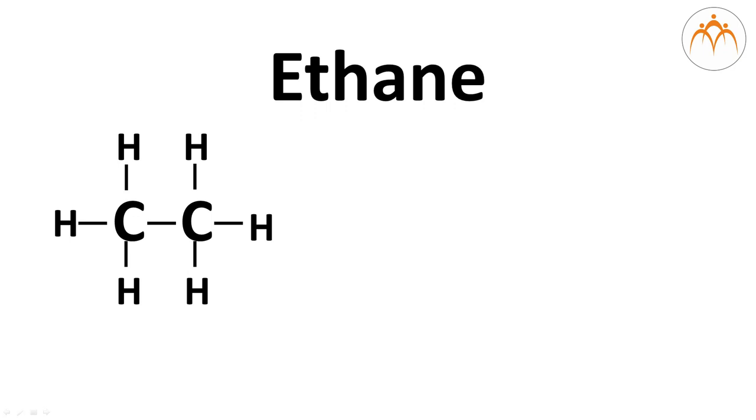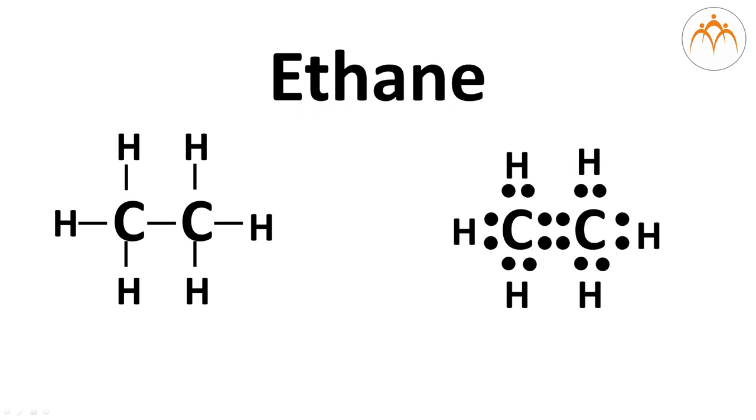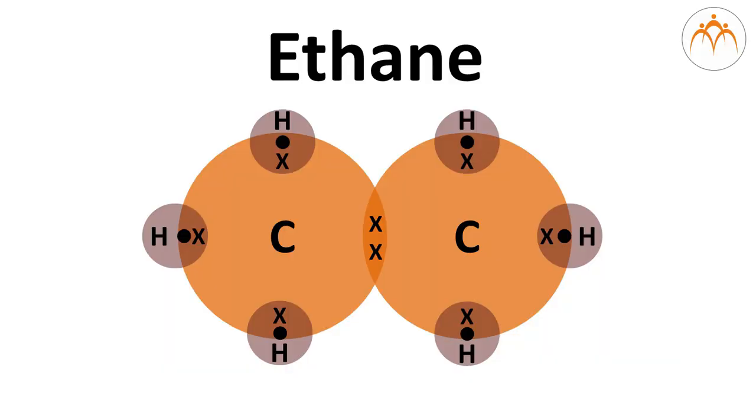The line bond formula looks like this. Now if I want to draw the Lewis electron dot structure of the same molecule, I need to understand that each of these bonds is formed by overlap of two electrons such that these two electrons are shared between the two elements. In case of carbon-carbon bond each of the carbon is donating one electron and the same happens when they want to form bond between carbon-hydrogen. You can see that the electron dot structure of ethane is like this.